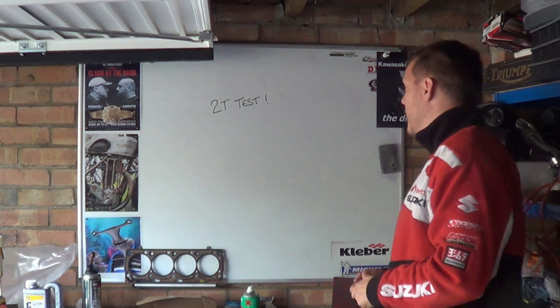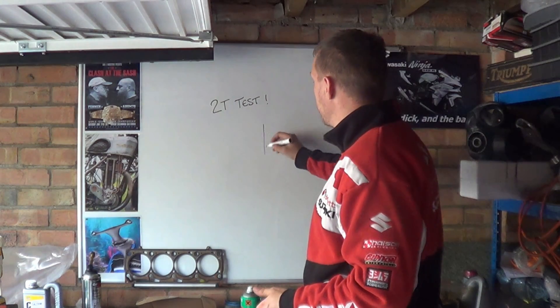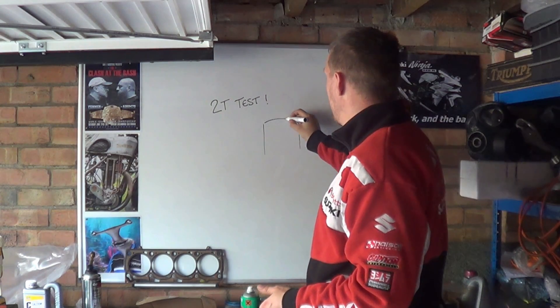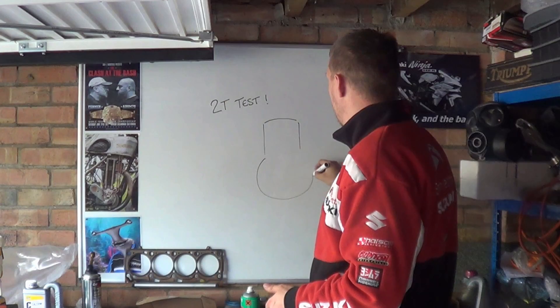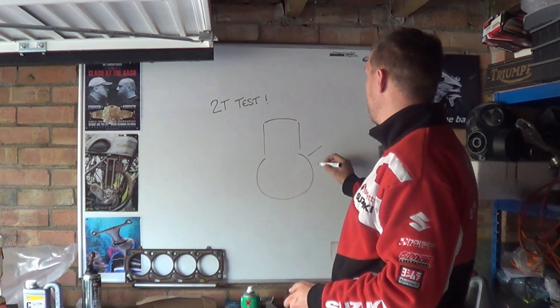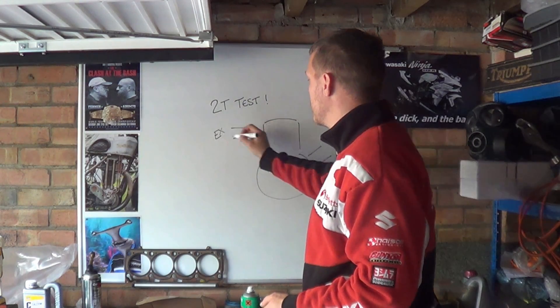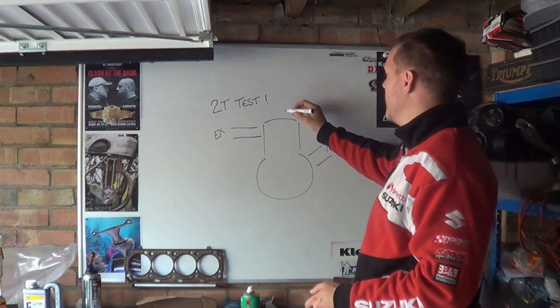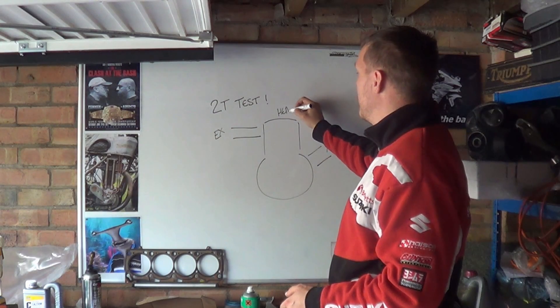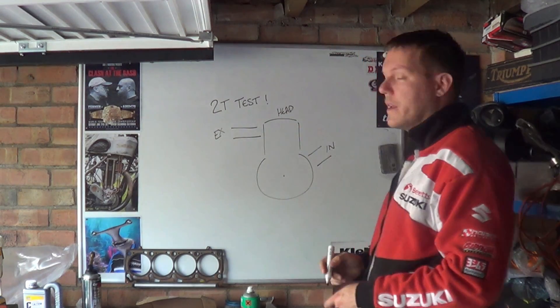So, you have a cylinder, a cap, and a bottom bit. And then you have an intake, and then you have an exhaust. Exhaust, in, head, fit in the middle.